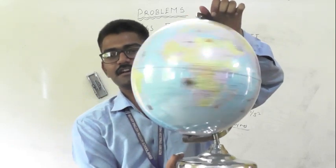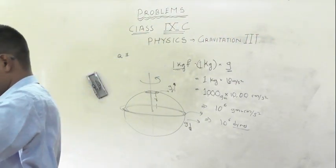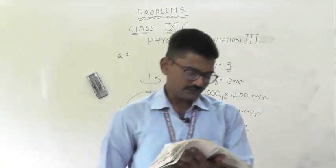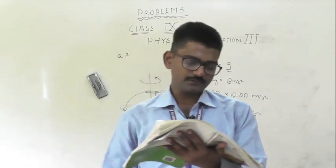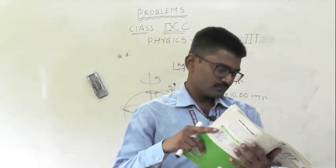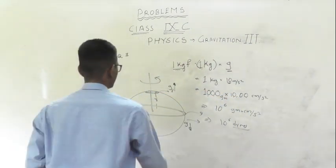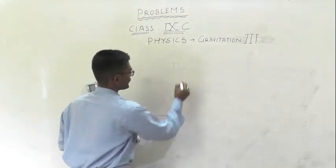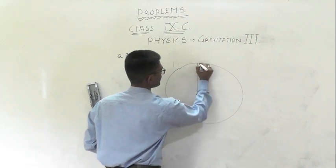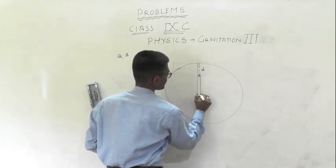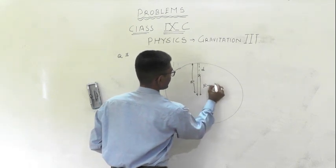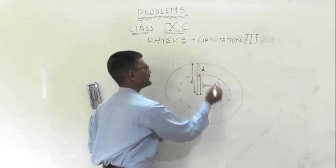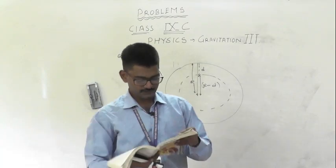When a body is at a depth d from the earth surface, its distance from the center of the earth is R minus d. From the center, if you go deep up to d, the distance from center is R minus d. This imaginary inner sphere is the part of the earth that is pulling us at that depth.